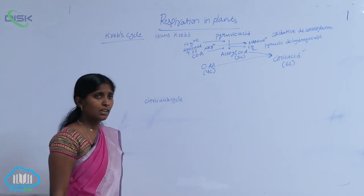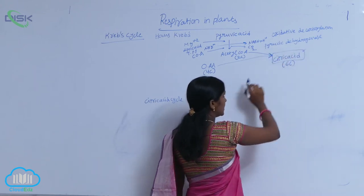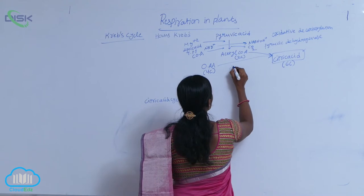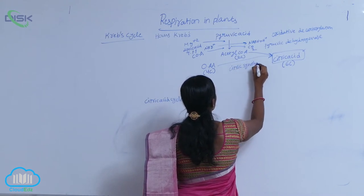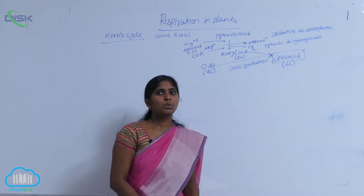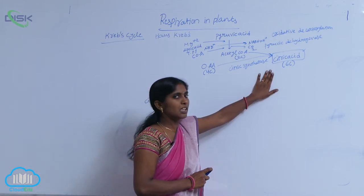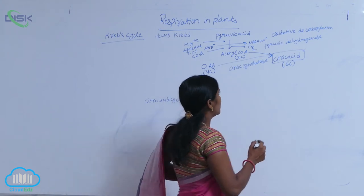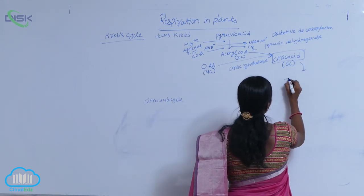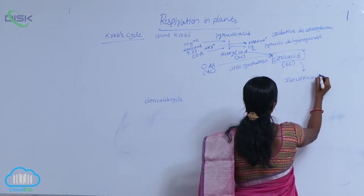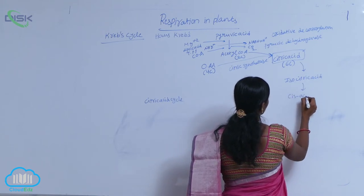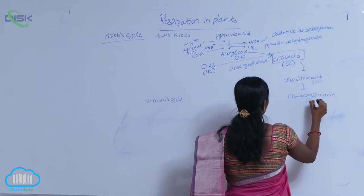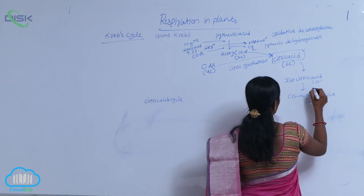Why is it called the citric acid cycle? Because the first stable compound formed is citric acid during the Krebs cycle. This reaction is mediated by the enzyme citrate synthetase — the synthetase enzyme works to synthesize. Here the citric acid is synthesized, and the next following reactions produce isocitric acid and cis-aconitic acid. These are all 6-carbon molecules. The working enzyme here is aconitase.